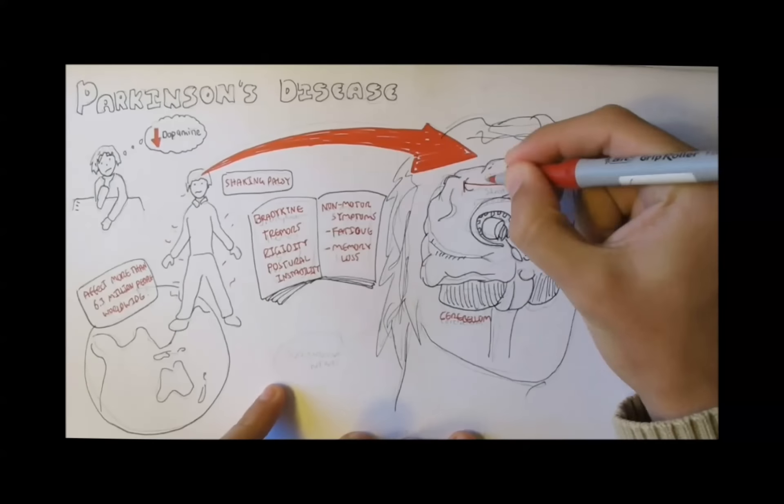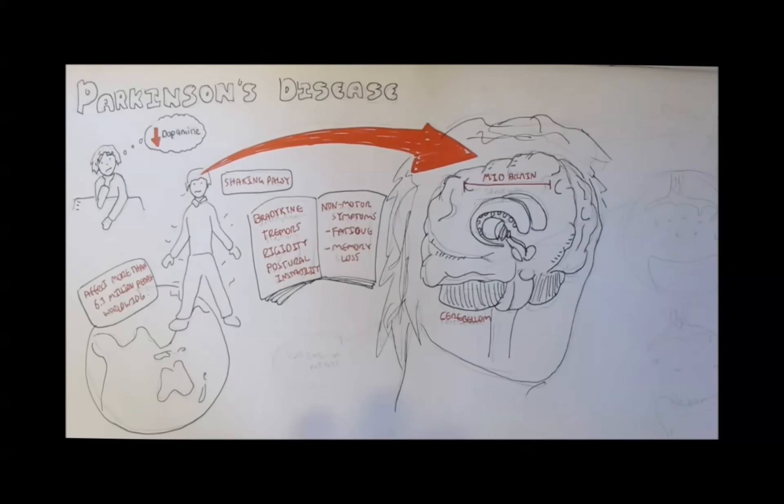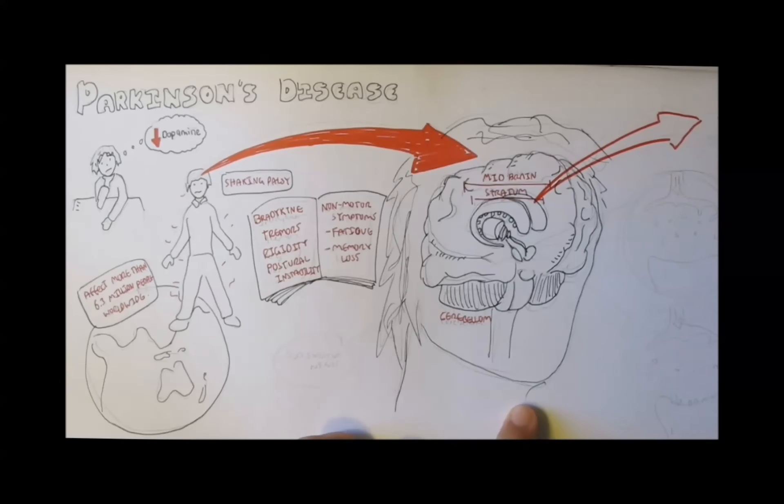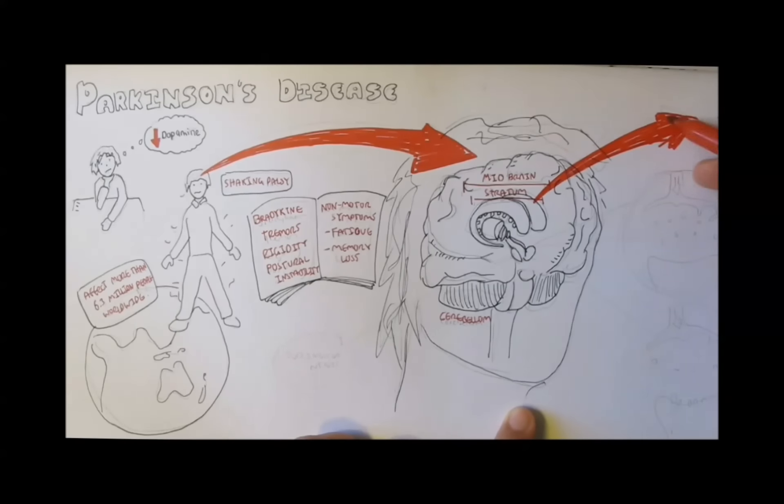Then, you have the striatum, which is part of the basal ganglia, the basal nuclei within the midbrain. It is involved in initiating voluntary motor movements, learning, and behavior.